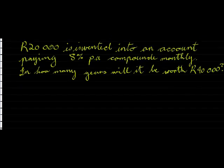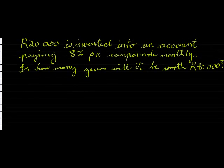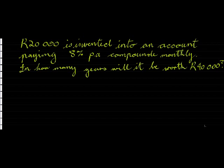Let's look at a typical example. R20,000 is invested into an account paying 8% per annum compounded monthly. In how many years will it be worth R40,000? We see this is not a recurring investment — R20,000 is invested once, and the interest is compounded monthly. So I must decide which formula to use.